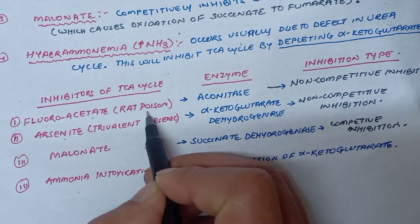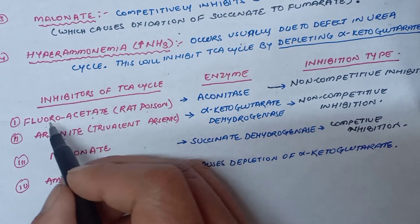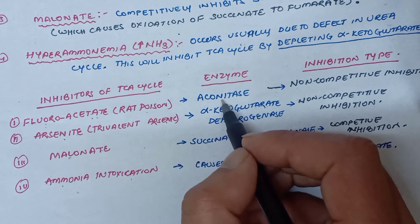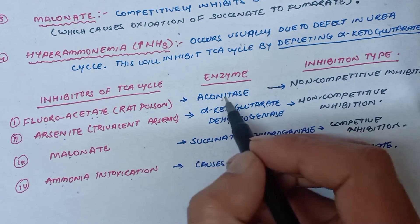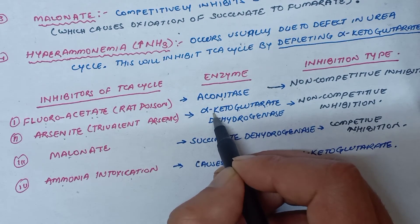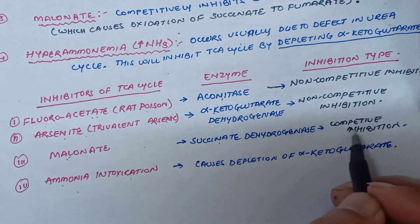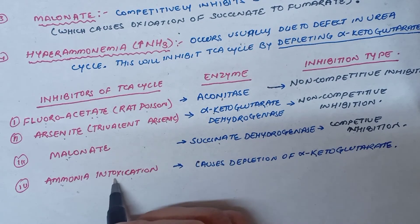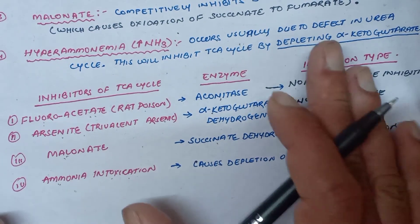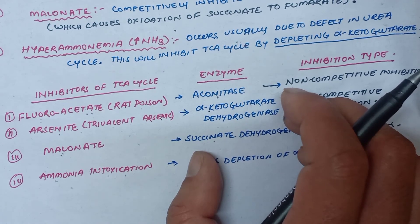To summarize: the inhibitors of the TCA cycle are fluoroacetate (a rat poison), arsenite (trivalent arsenic), malonate, and ammonia intoxication. Fluoroacetate inhibits aconitase by non-competitive inhibition, causing accumulation of citrate. Arsenite inhibits alpha-ketoglutarate dehydrogenase by non-competitive inhibition. Malonate inhibits succinate dehydrogenase by competitive inhibition. Ammonia intoxication causes depletion of the alpha-ketoglutarate substrate. If you like the video, please like, subscribe, and share with your friends.